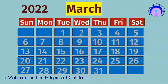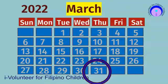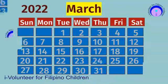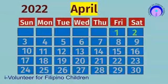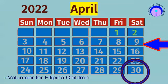This is March, the third month of the year. It ends on the 31st day. This is April, the fourth month of the year. It has 30 days.